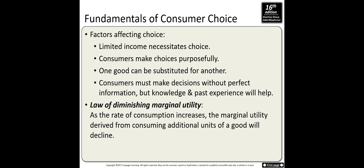Second, consumers make choices purposefully. That means if you equally like pizza and steak, you may choose pizza because it's cheaper, so you're actually acting as a rational person. Third, one good can be substituted for another. For example, if you like Coke but Coke prices are increasing, you can substitute with another brand of soda.